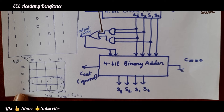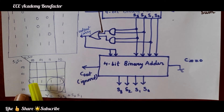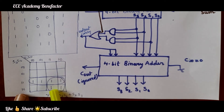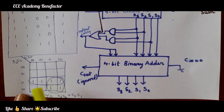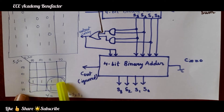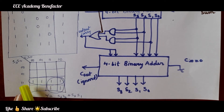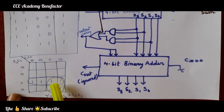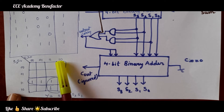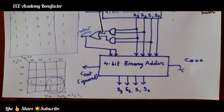We have seen that when the sum is greater than 9, all those numbers are 1. The cell numbers from 10, 11, 12, 13, 14, 15 — these 6 numbers are 1. First we make the grouping of one quad and then another quad. For the first quad we get S3·S2, and for the second quad we get S3·S1. So the Boolean expression is Y = S3·S2 + S3·S1. This is the logic circuit equation when the sum is greater than 9.